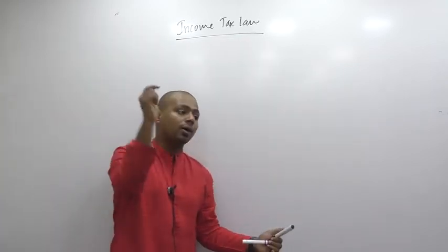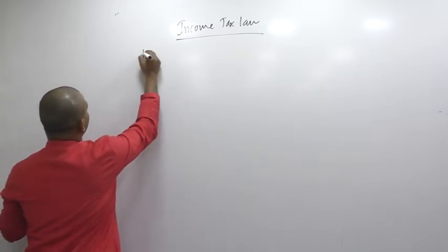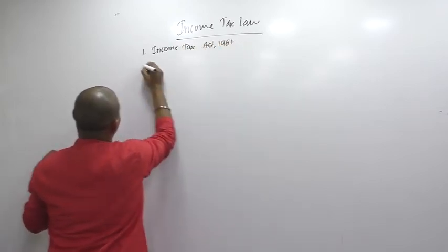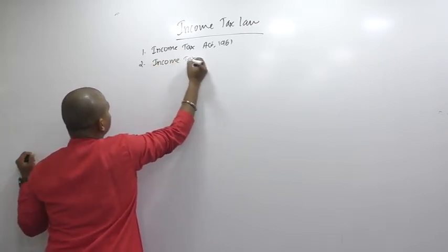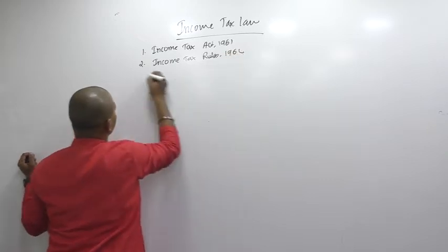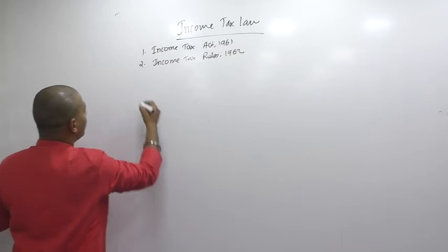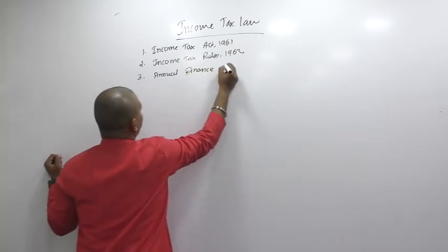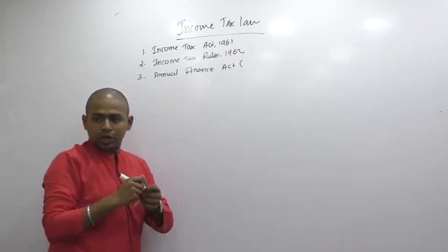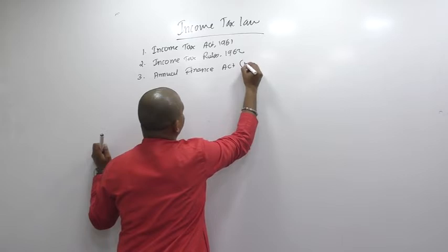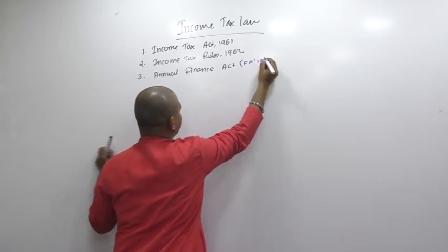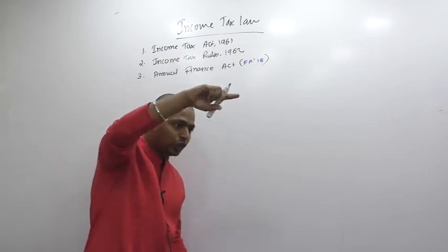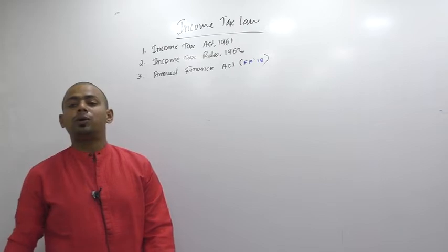So what do we study under income tax law? First, the Income Tax Act 1961. Second, the Income Tax Rules 1962 — the rules came in 1962. Third, the Annual Finance Act — which is essentially the budget. When we say the budget has come, that means the Finance Act has been passed. For your exam, Finance Act 2018 (FAA 2018) is applicable. Your institute's website currently shows the syllabus as per budget 2017, which was applicable for the December attempt.